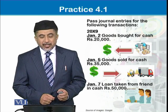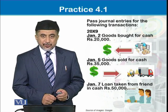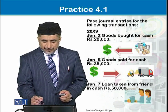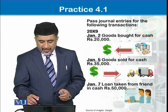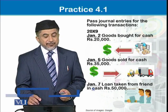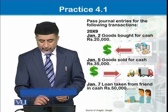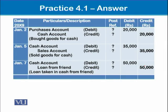On 2nd January, goods are bought for cash rupees 20,000 — we are buying goods against cash. Then goods sold for cash 35,000, and then loan taken from a friend for 50,000. In the first transaction where we bought goods for 20,000, debit is given to purchases account and credit is given to the cash account. For post reference we put a question mark because we do not know the page number of the ledger. The debit amount and credit amount are recorded in their respective columns.